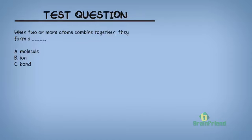When two or more atoms combine together, they form a — A, molecule; B, ion; C, bond. If you chose option A, then you are correct. Remember we said that a molecule is formed when two or more atoms combine together.